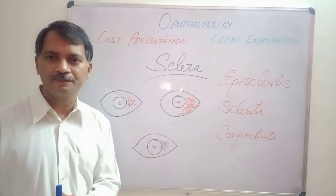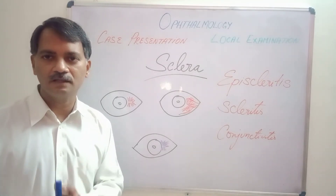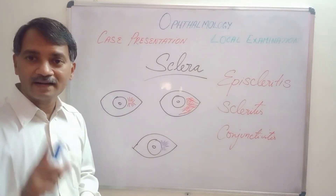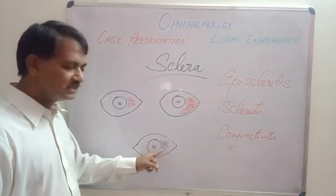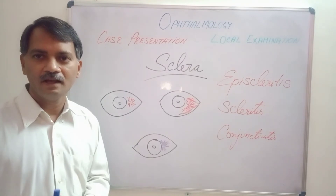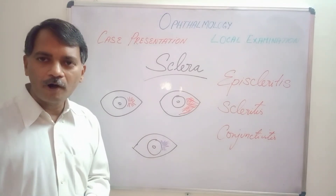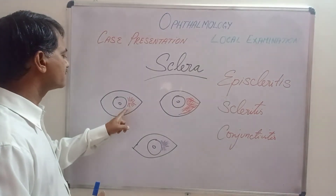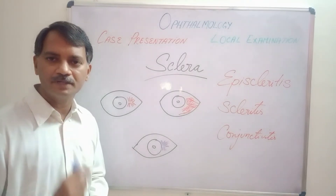Usually, episcleritis and scleritis are sectoral; very rarely will they be diffuse. The vessels will be arranged in a radial pattern. But the redness in episcleritis will look red in color, whereas the congestion in scleritis will look purplish. Putting a drop of 2.5% phenylephrine into the conjunctival sac will lead to blanching of episcleritis, but this purplish congestion of scleritis will not blanch with 2.5% phenylephrine.